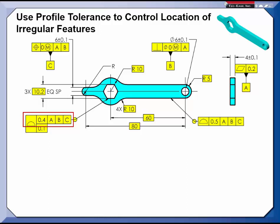The upper segment of the feature control frame controls where the feature is located and oriented on the part. The lower segment of the feature control frame refines the size and form of the feature.